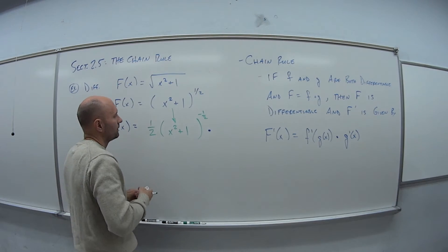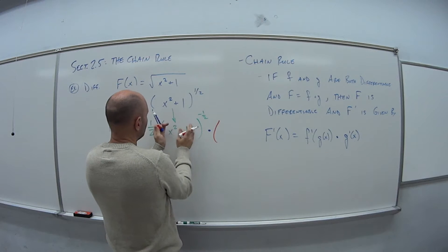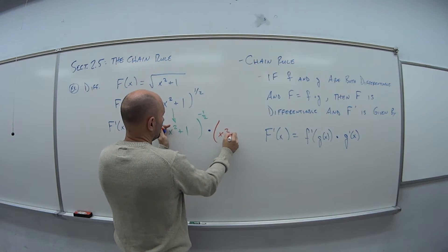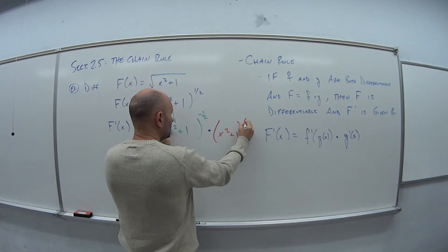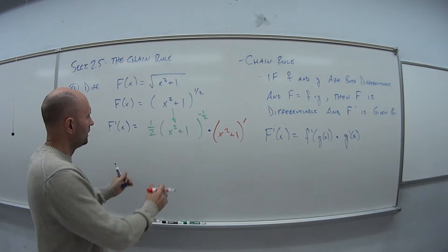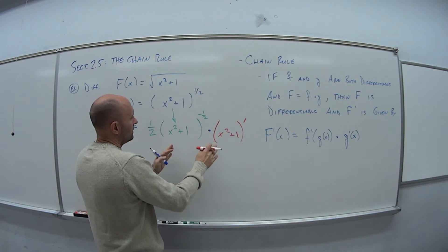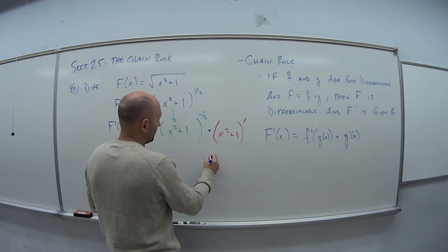But now I have to multiply this by the derivative of what's inside. So this piece I left alone, x squared plus one, now I need to take the derivative of that guy. So this first piece is done, we can simplify it. But now I need to still work on this one.